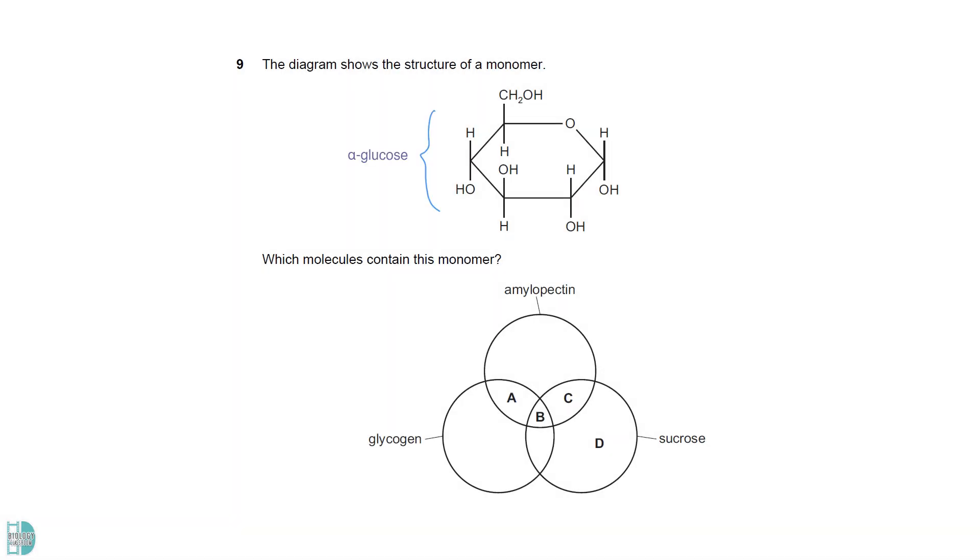The diagram shows an alpha glucose. We can tell by the position of the hydroxyl group on carbon number 1, which is below the plane. Glycogen and amylopectin are polysaccharides made up of alpha glucose. Sucrose is made up of an alpha glucose and a fructose.